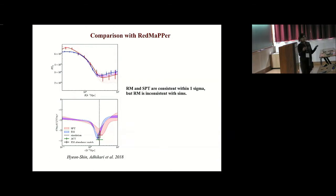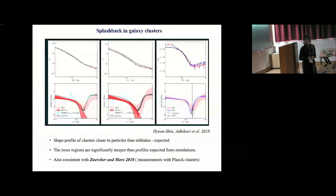I'd like to point out that even though the location of the splashback feature itself is different, the entire profile of the red mapper and SPT are quite significantly different from each other. It is something worth trying to pinpoint why that's happening. This is a summary of the different measurements of the splashback radius.